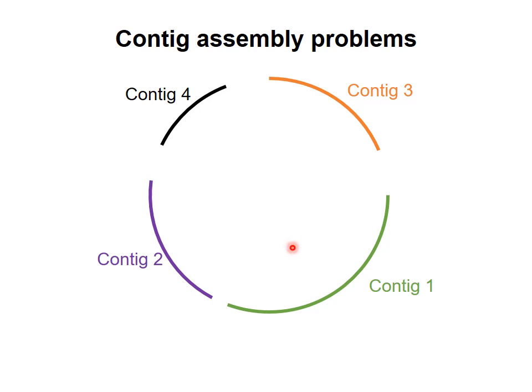For example, contig 1 could go next to contig 4, not opposite to it, as shown here. You know that each contig represents part of the genome, but you don't know the order they should go in, and you don't know the size of the gap in between each contig. To figure out how the contigs fit together, the researchers needed to fill the gaps in between them. I'll describe how they did that in the next video.